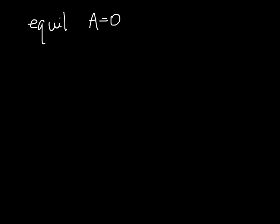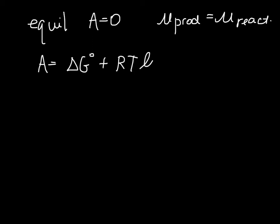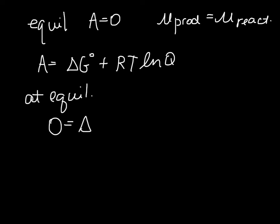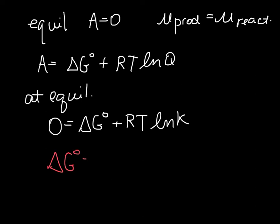We said that equilibrium occurs when the affinity is equal to zero, which means the chemical potential of the products equals the chemical potential of the reactants. Keeping in mind that A equals delta G naught plus RT·ln(Q), at equilibrium A equals zero and Q equals K. So we can rewrite this as delta G naught equals negative RT·ln(K). If we know delta G for the reaction at a given temperature, we can find the equilibrium constant.